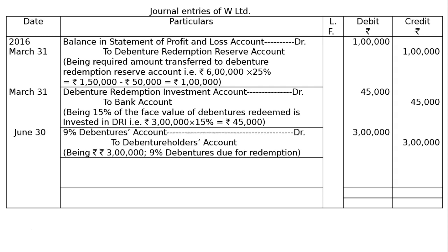The next entry is on June 30: 9% debentures account is debited to debenture holders account for rupees 3 lakhs in both the debit and credit columns — being rupees 3 lakhs of 9% debentures due for redemption. The amount to be redeemed is rupees 3 lakhs. This is just the due entry.